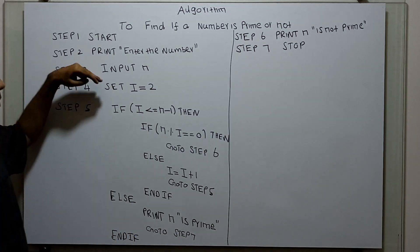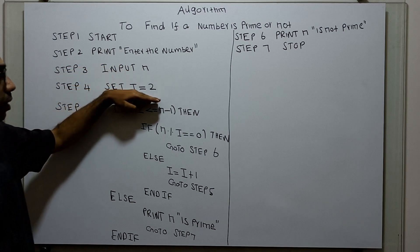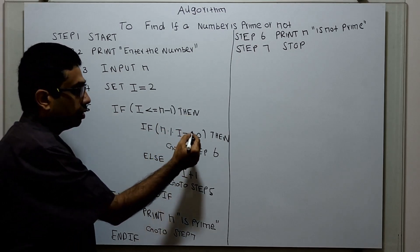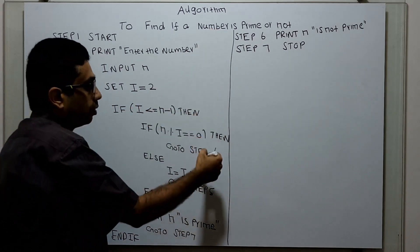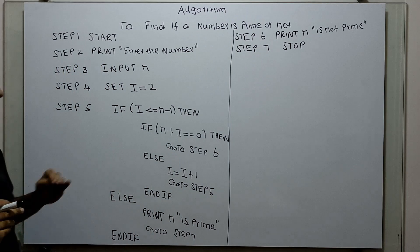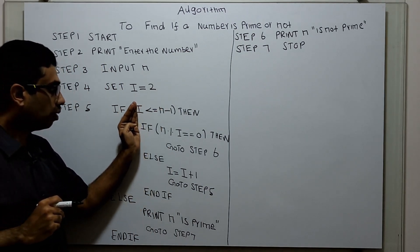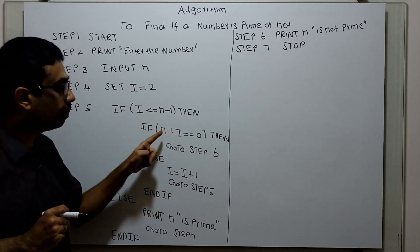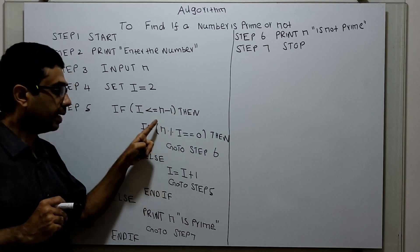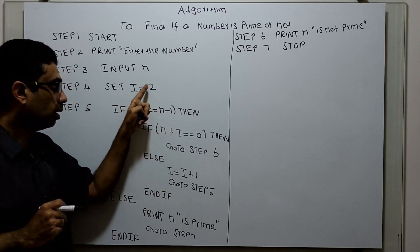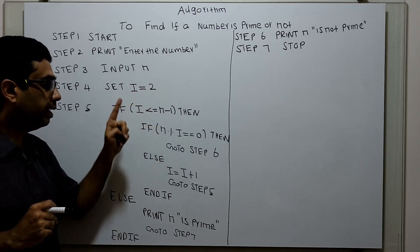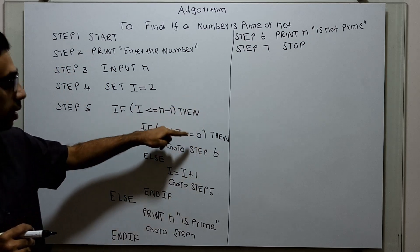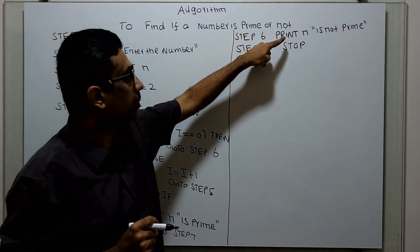So to summarize: I obtain input n from the user, set i equal to 2, and when i is less than or equal to n minus 1, I check whether n modulo i equals 0. If it is 0, the control moves to step 6 — n is not prime — because the loop goes from i=2 to n minus 1, and if n is completely divided by any i value, it does not meet the property of a prime number.